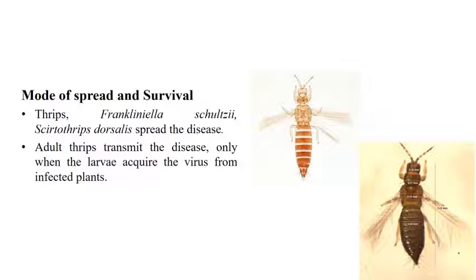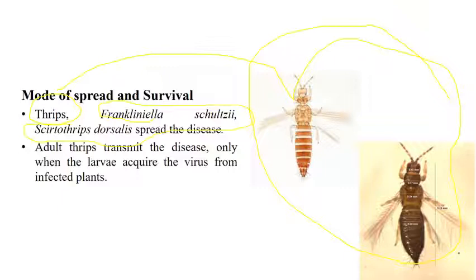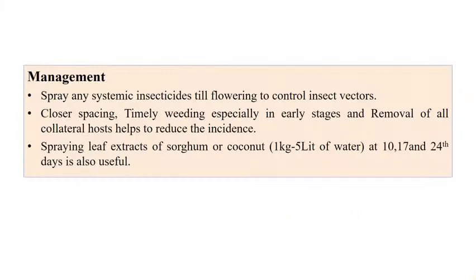TSWV is transmitted by thrips. The thrips species involved include Frankliniella schultzei and Scirtothrips dorsalis. Adult thrips can transmit the virus only after acquiring it. For management, apply systemic insecticides till flowering to control vectors. Close spacing, timely weeding, and spraying leaf extracts of sorghum or coconut (1 kg in 5 liters of water) at 10, 17, and 24 days after transplanting are recommended as antiviral measures.